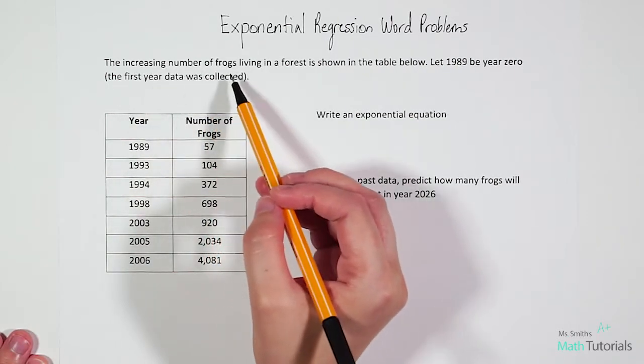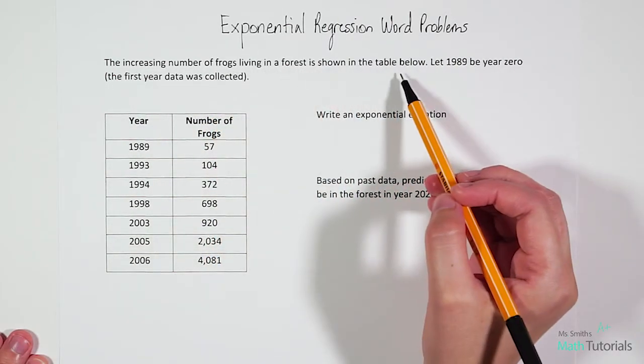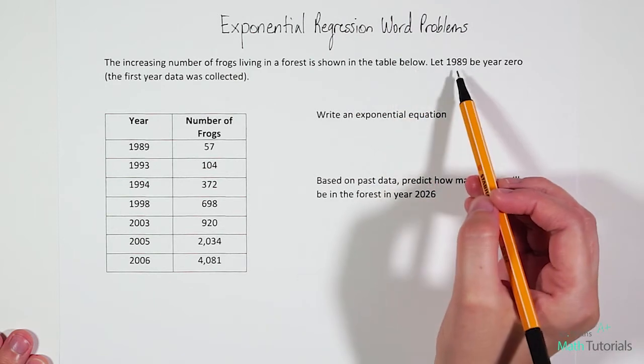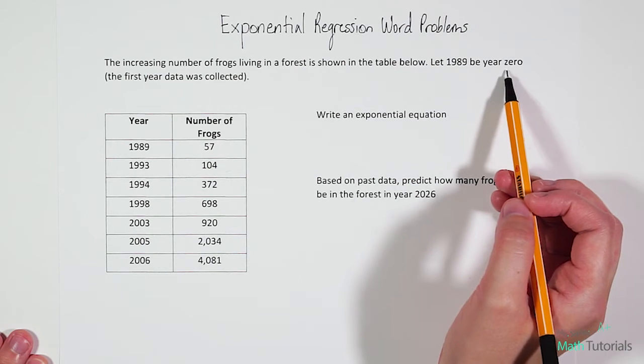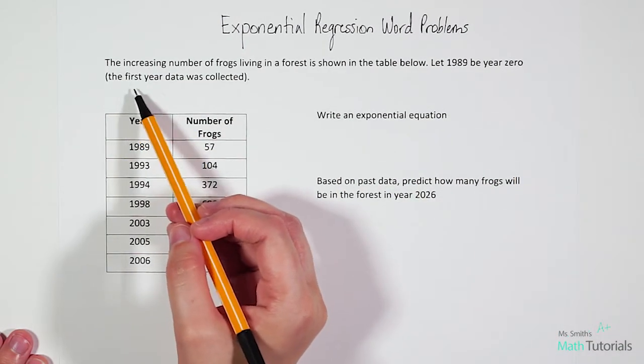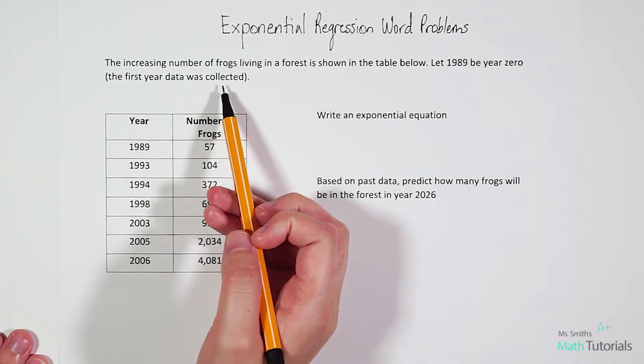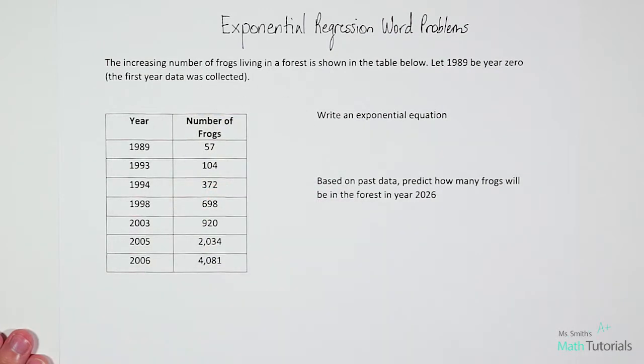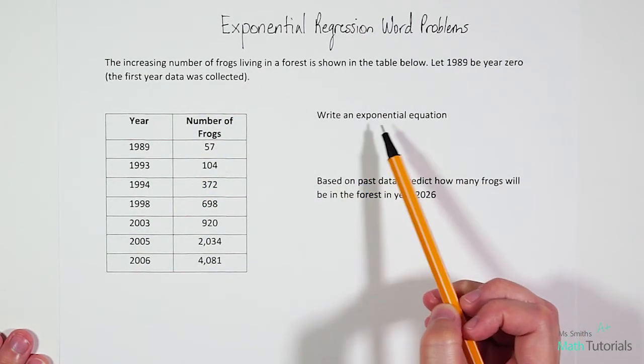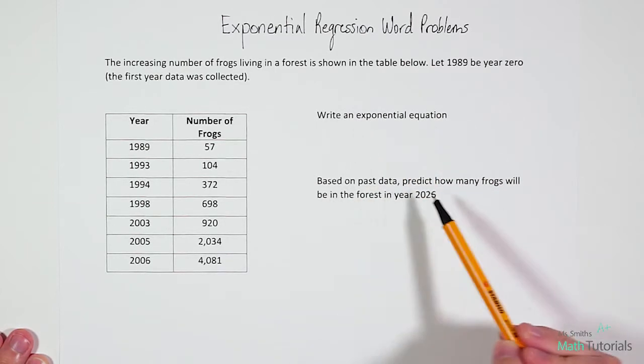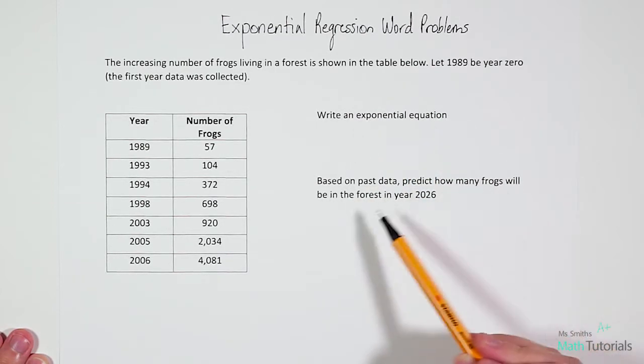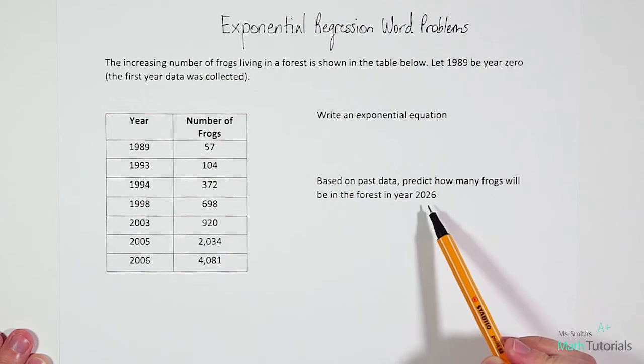The increasing number of frogs living in a forest is shown in the table below. Let 1989 be year zero, and what that means is that's the first year the data was collected. So they want us to write an exponential equation and then based on past data, predict how many frogs will be in the forest in year 2026.